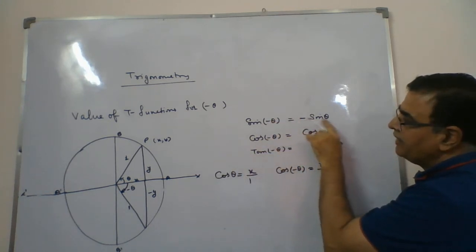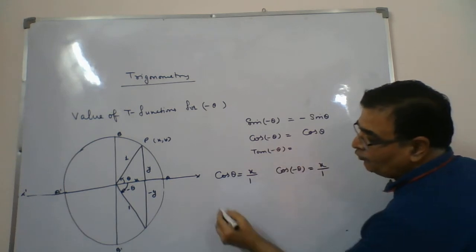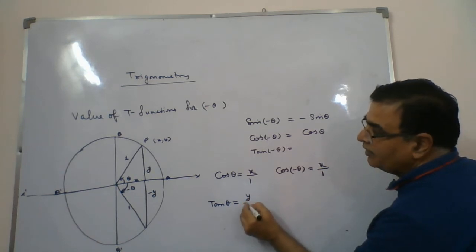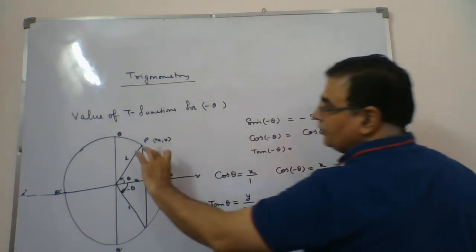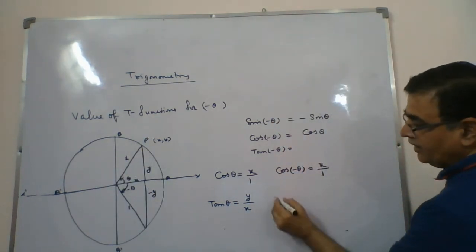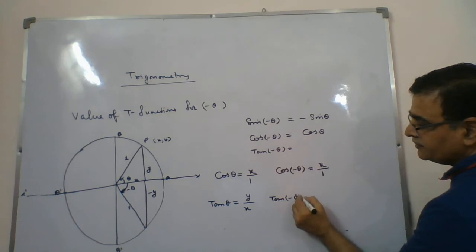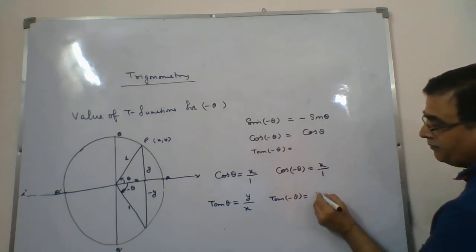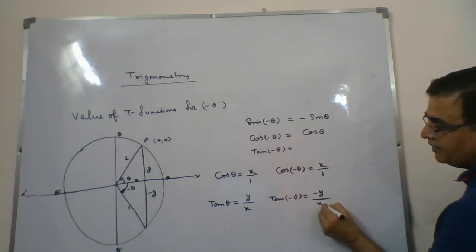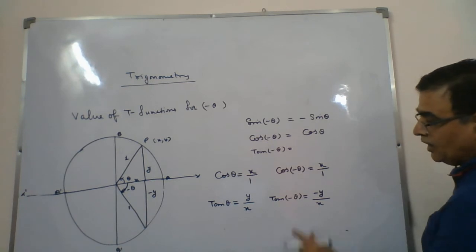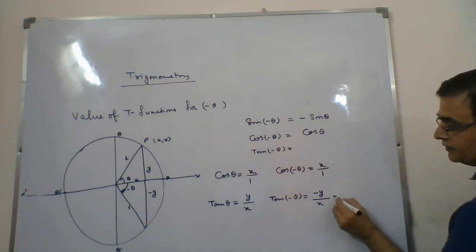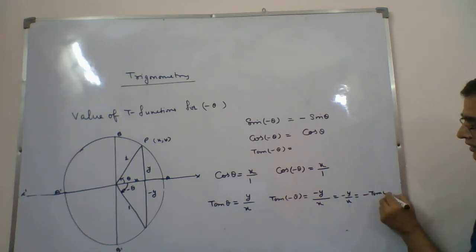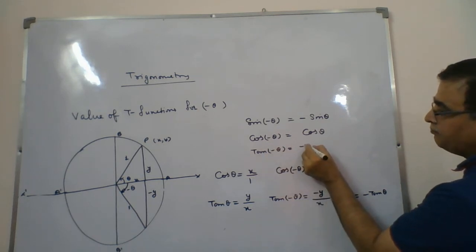Sine of minus theta gives minus sine. Now for tan theta: tan is perpendicular by base, which is y by x. For tan of minus theta, the perpendicular will be minus y and the base will be x. So tan of minus theta equals minus y by x, and since y by x is simply tan theta, it comes out to be minus tan theta.